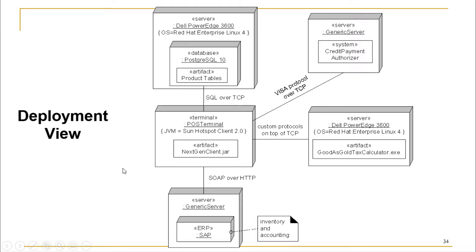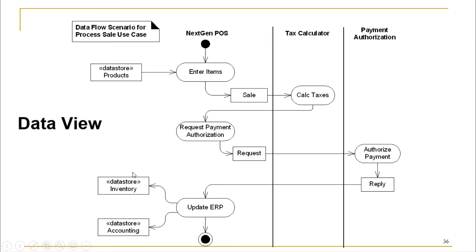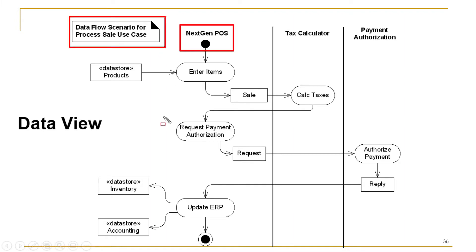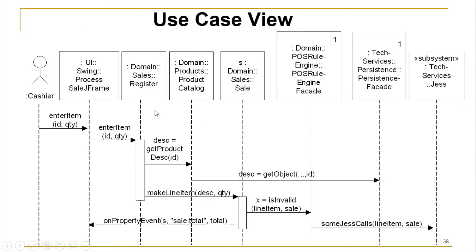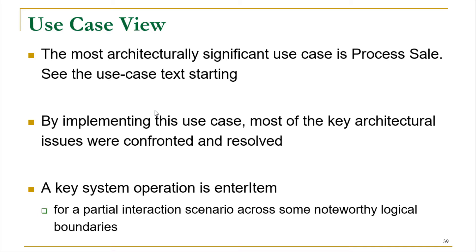The data view explains the data flow scenario for the process sale use case, since the most important use cases must be highlighted. The flow of that use case is explained in text, and in the use case view, a sequence diagram explains the steps and scenarios taking place in that particular use case, followed by further textual discussion.